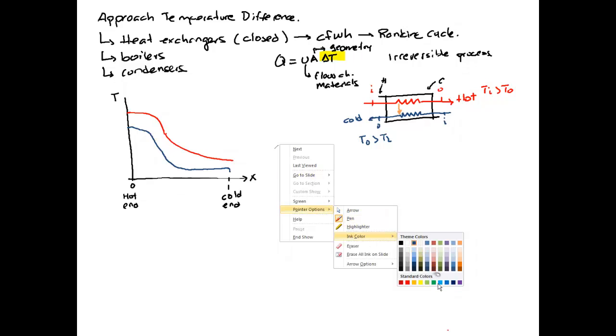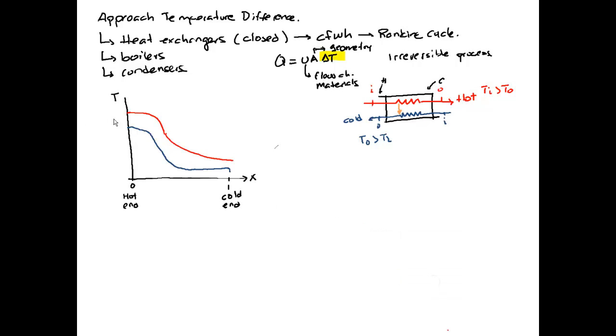And we can see that we have two temperature differences. This is one temperature difference and this is the other temperature difference. We will call either of these the approach temperature difference. And each of these points where we are defining, we will call it the pinch point.